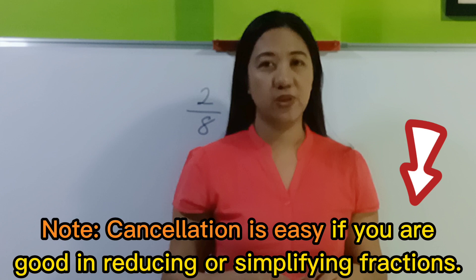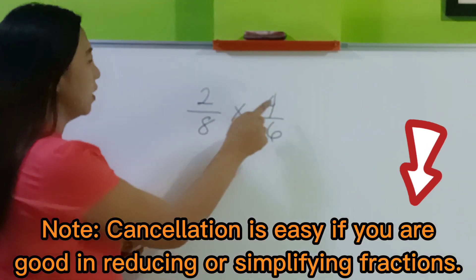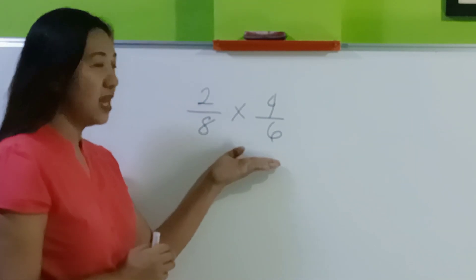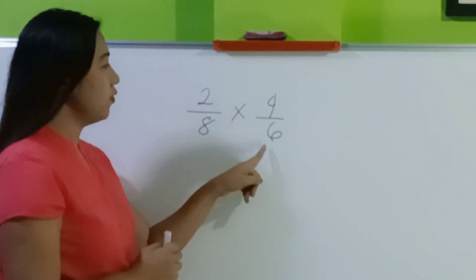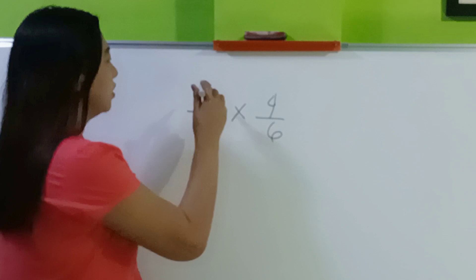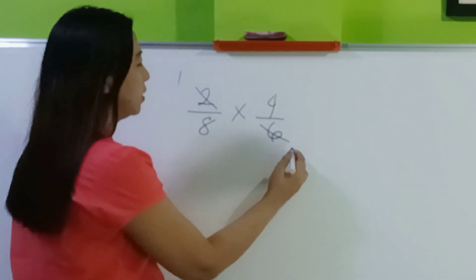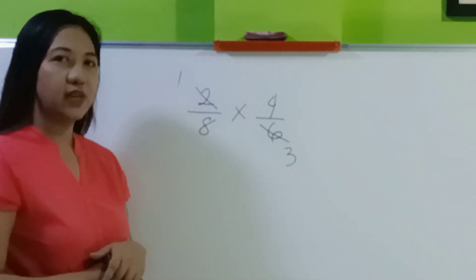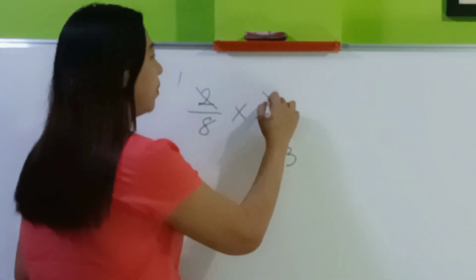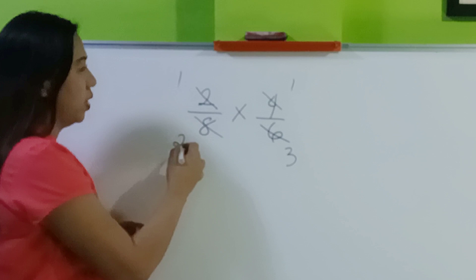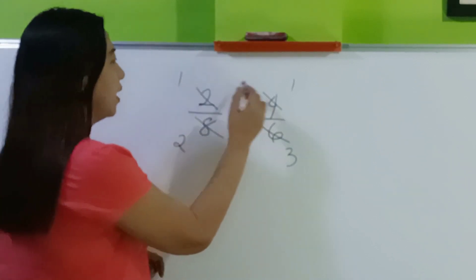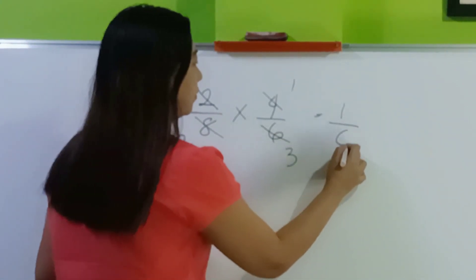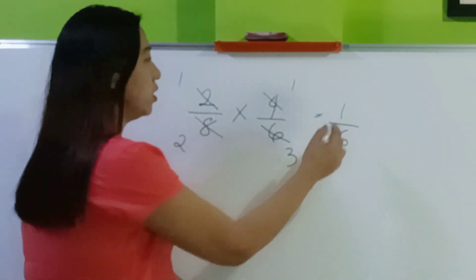Can you simplify 2 over 36? Divide both by 2: 2 divided by 2 is 1, 36 divided by 2 is 18. So the final answer is 1/18. Sometimes you may also cancel diagonally. For example, 2/8 times 4/6 — you can cancel 2 and 6: 2 divided by 2 is 1, 6 divided by 2 is 3. For the other pair, 4 and 8: 4 divided by 4 is 1, 8 divided by 4 is 2. Now multiply: 1 times 1 is 1, 2 times 3 is 6. So the final answer is 1/6.